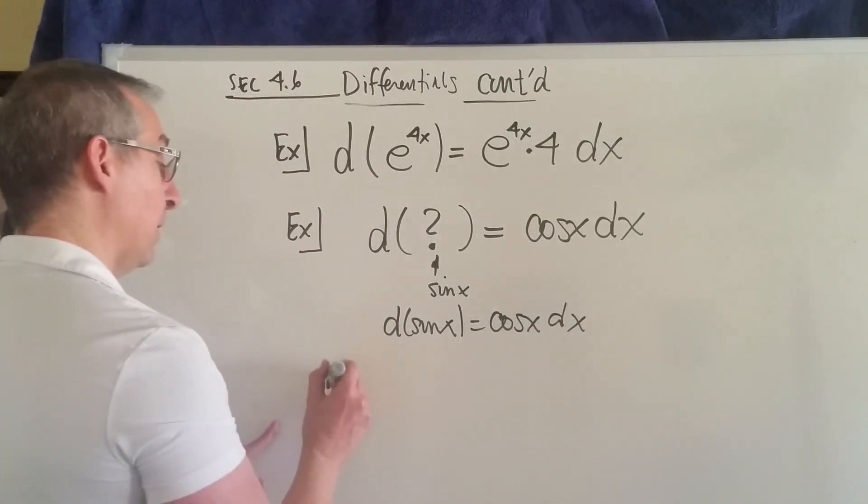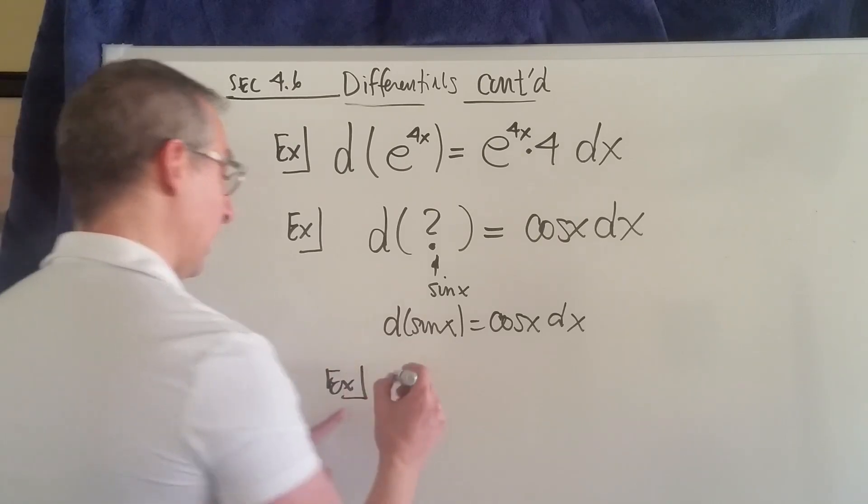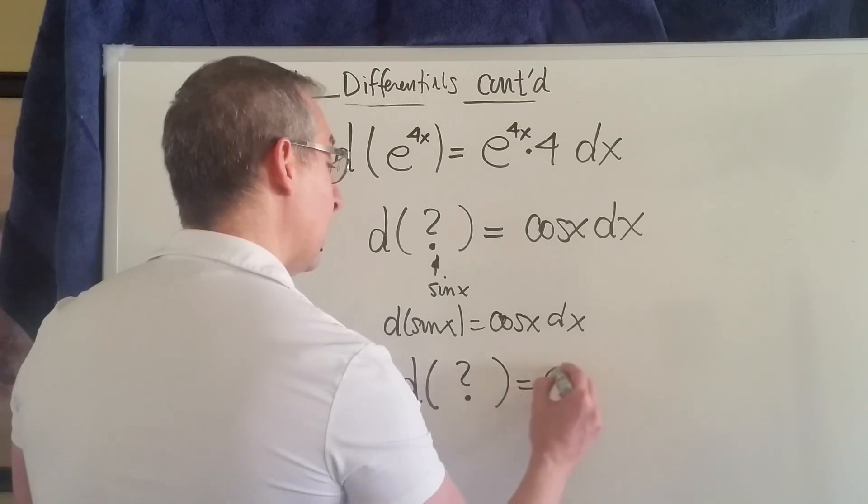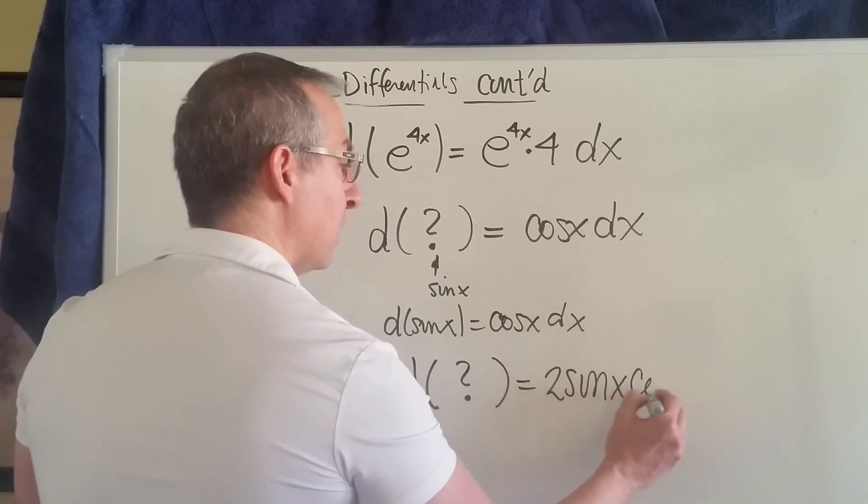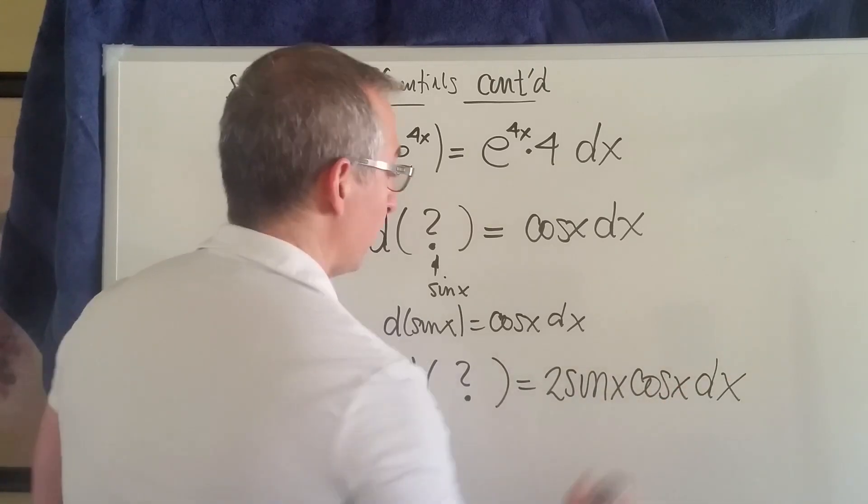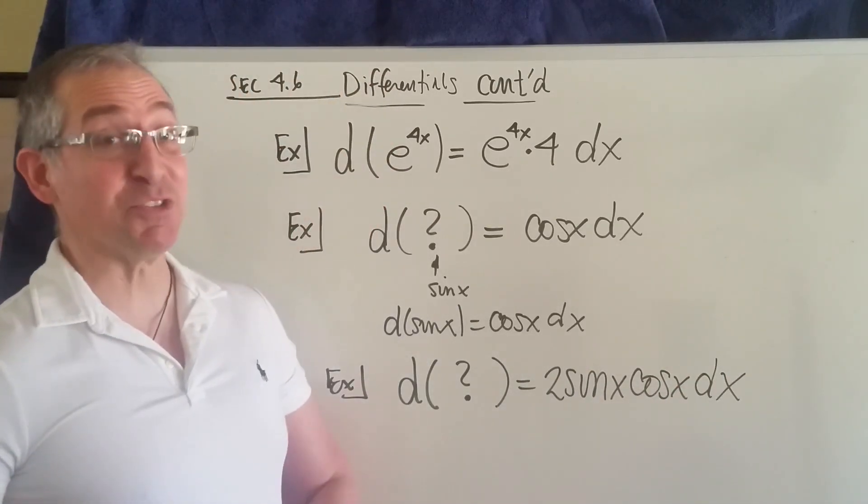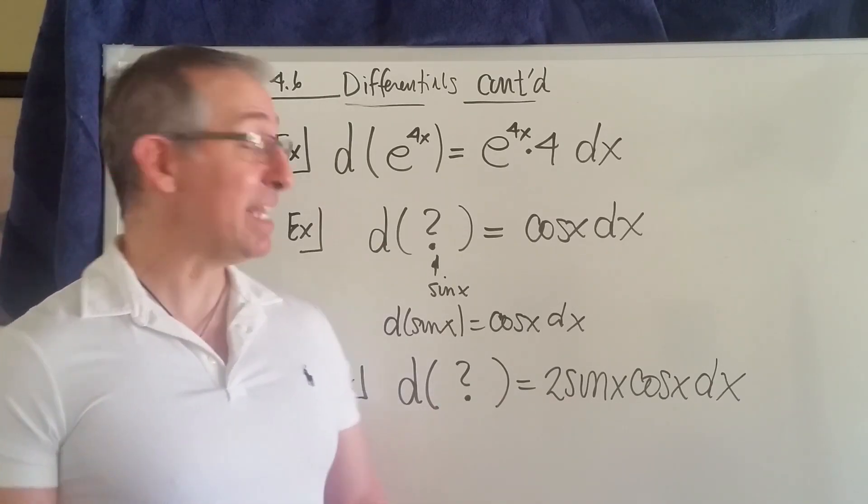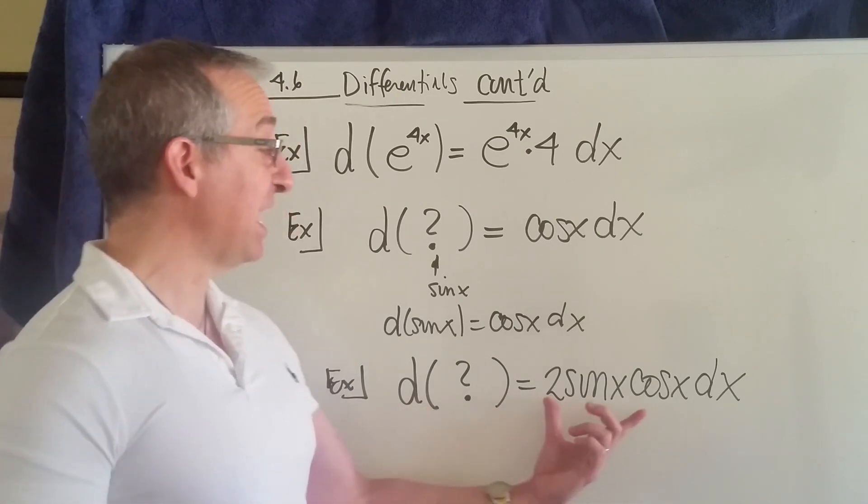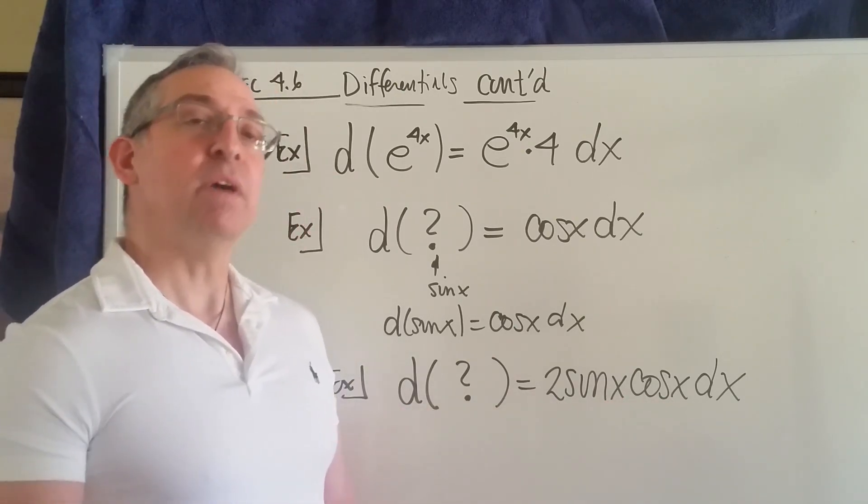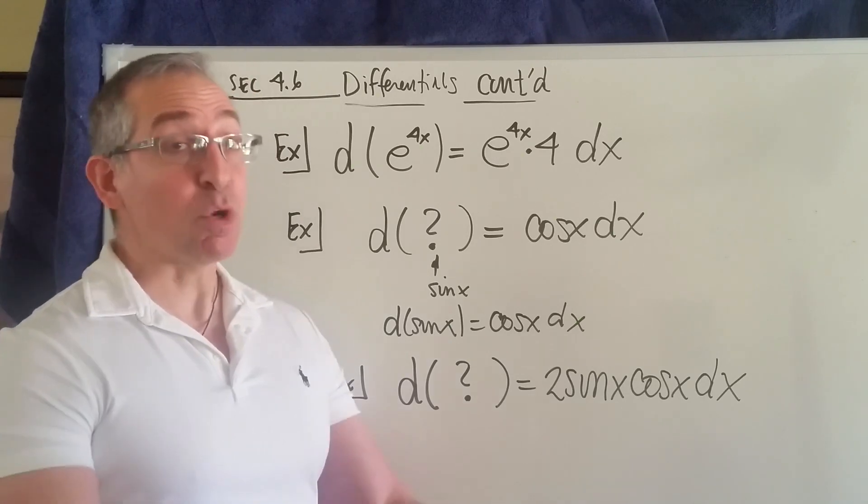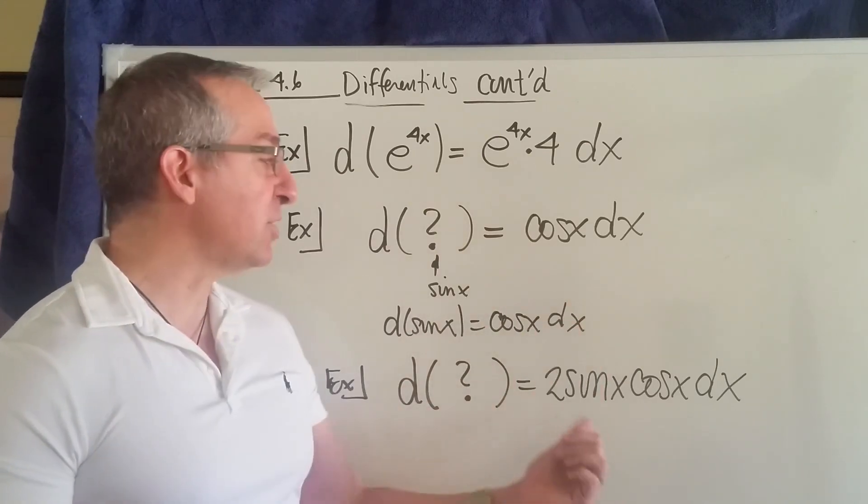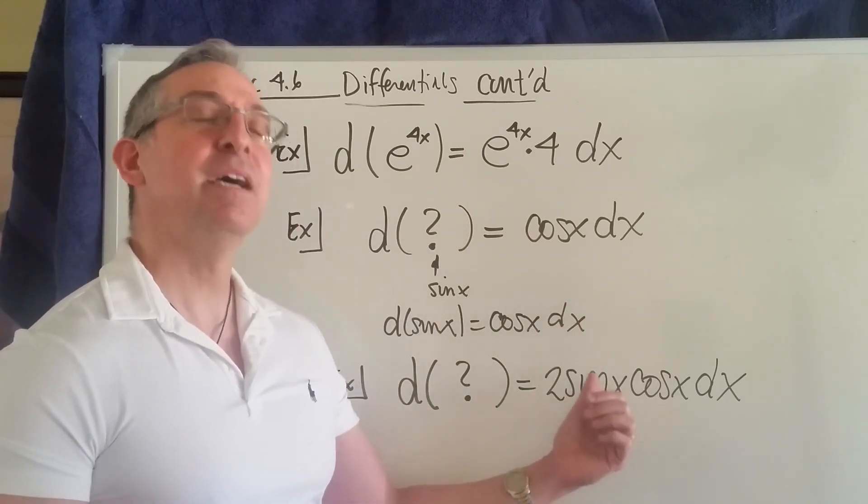Here's another one. Now it's a little bit more of a challenge for us. This says the differential of some function, and we have to figure out what that is. The differential of some function is equal to this quantity right here. What function can you think of? Now you have to work backwards. You got to think about this.